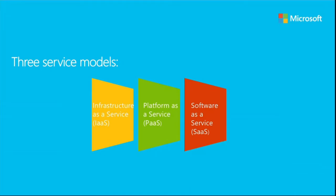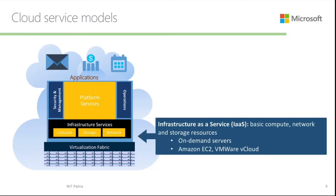Regarding service models: Infrastructure as a Service (IaaS) — the customer gets only basic compute, network, and storage resources. No software resources are provided to the customer. On-demand services are provided, like Amazon EC2, VMware vCloud — these kinds of services are provided in IaaS.